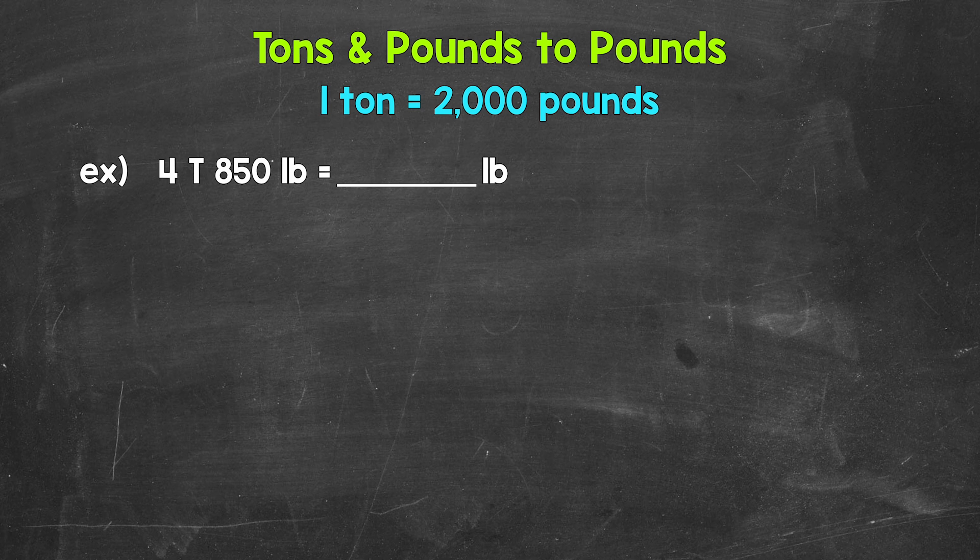Again, one ton equals 2,000 pounds. So to convert 4 tons to pounds, we multiply by 2,000. 4 times 2,000 gives us 8,000.